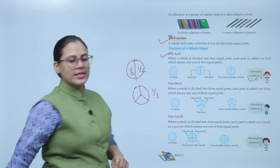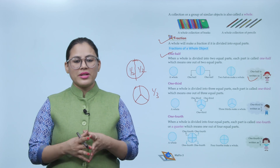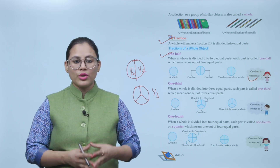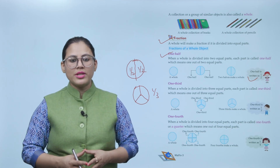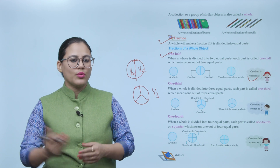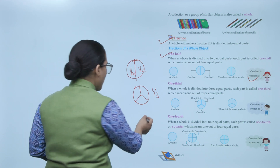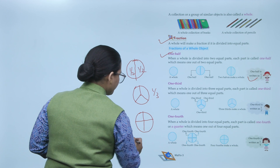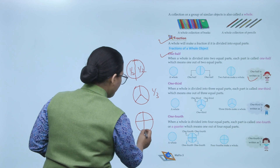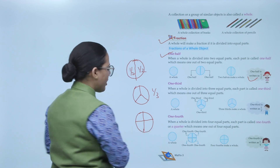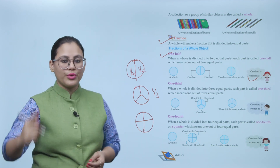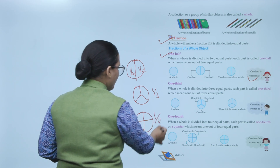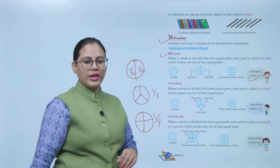One fourth: when a whole is divided into four equal parts, each part is called one fourth or a quarter, which means one out of four equal parts. One fourth is written as 1 by 4.